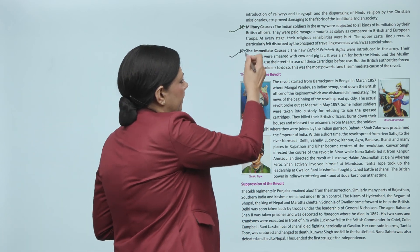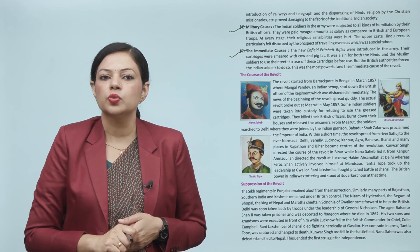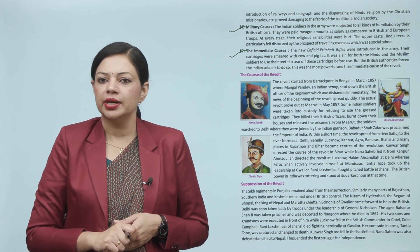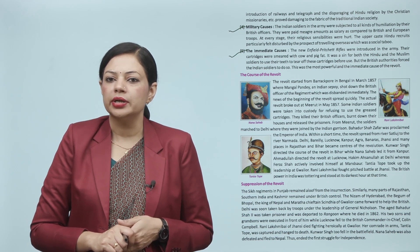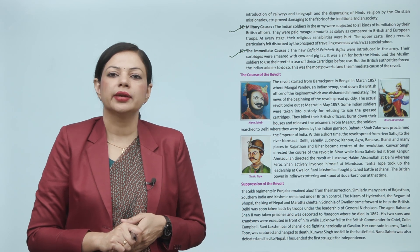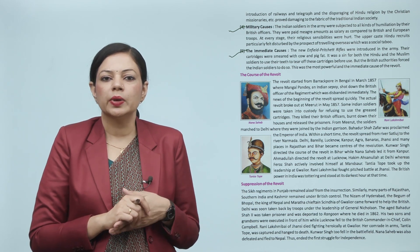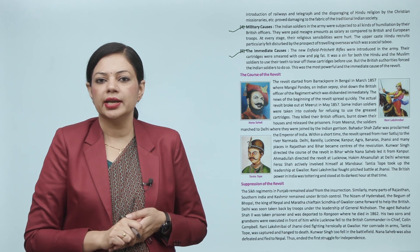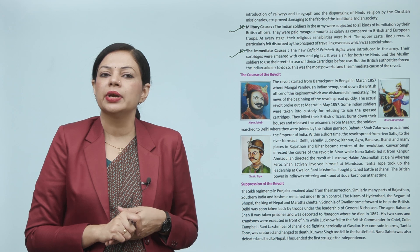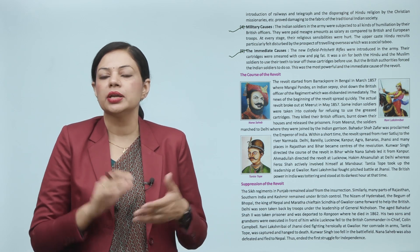Next is the immediate cause. The new Enfield rifles were introduced in the army. Their cartridges were smeared with cow and pig fat. It was a sin for both Hindu and Muslim soldiers to tear off their cartridges before use. But the British authorities forced the Indian soldiers to do so. This was the most powerful and immediate cause of the revolt — the rumor that cartridges contained cow and pig fat, which had to be bitten off with the mouth, hurt both Hindu and Muslim sentiments, and they refused to comply.